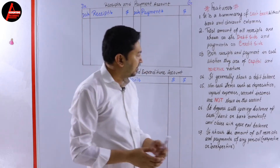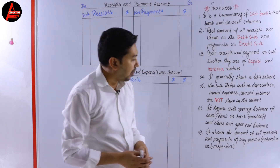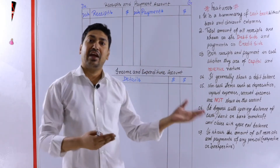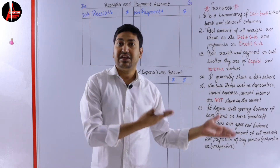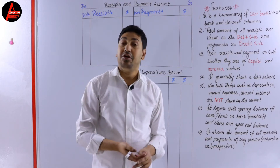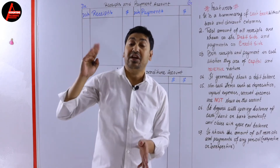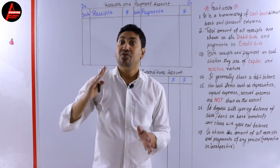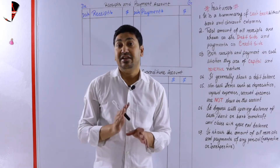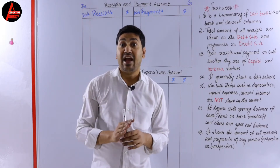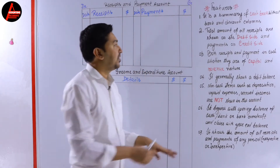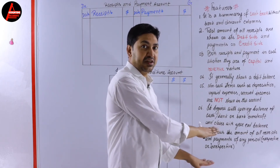Number seven: it shows the amount of all receipts and payments of any period. Period means accounting period - like this year you are doing for 2020-21. But if you have any receipt from a previous period like 1920 or 1819, if it is a receipt or payment made in cash you have to take it and write it in this account. Please remember these features - they are very important to prepare the receipt and payment account.